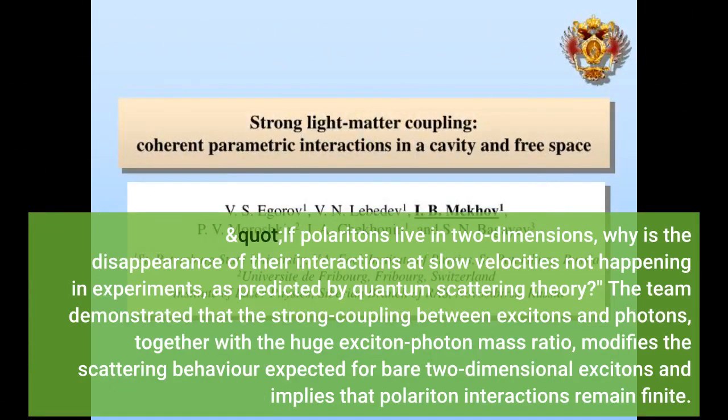If polaritons live in two dimensions, why is the disappearance of their interactions at slow velocities not happening in experiments, as predicted by quantum scattering theory? The team demonstrated that the strong coupling between excitons and photons, together with the huge exciton-photon mass ratio, modifies the scattering behavior.